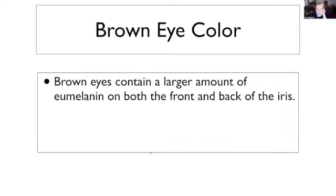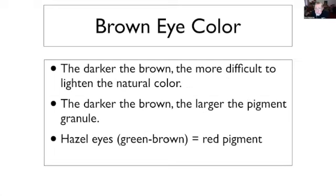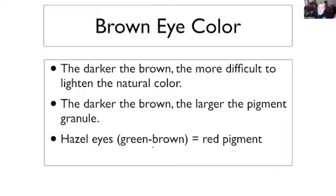Brown eyes contain a larger amount of eumelanin on both the front and the back of the iris. The larger the amount of eumelanin, the darker the brown will look, and the darker the brown, the more difficult it is to lighten natural color — and the larger the granule that holds the natural pigment inside. If you have hazel eyes or green-brown eyes, that means you've got a red pigment, and you are doubly in trouble: if they're darker green-brown with a golden ring or flecks, you're going to pull red and not be able to lighten the hair to the palest color without tremendous damage to the hair structure.